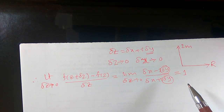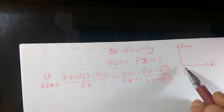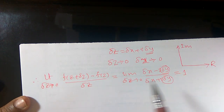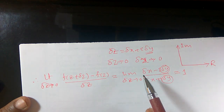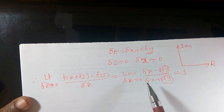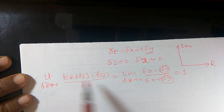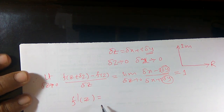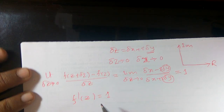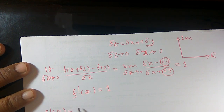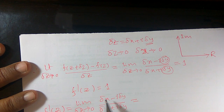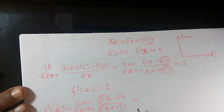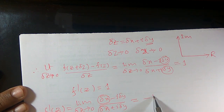Similarly, taking Δz → 0 along the imaginary axis means Δx = 0, so Δz → 0 is equivalent to Δy → 0. From Equation 1, f′(z) = limit as Δz → 0 of (Δx − iΔy) / (Δx + iΔy). Replacing Δx by 0, the Δy terms cancel in a way that gives minus 1. So f′(z) = −1 in this case.